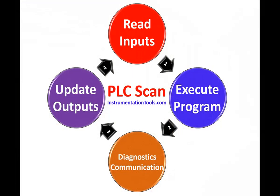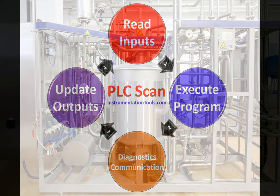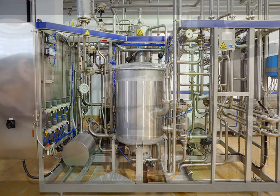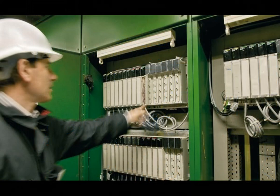PLCs play a crucial role in automating and controlling various processes in industries such as manufacturing, energy, and transportation. They provide flexibility, reliability, and ease of maintenance in industrial automation systems.